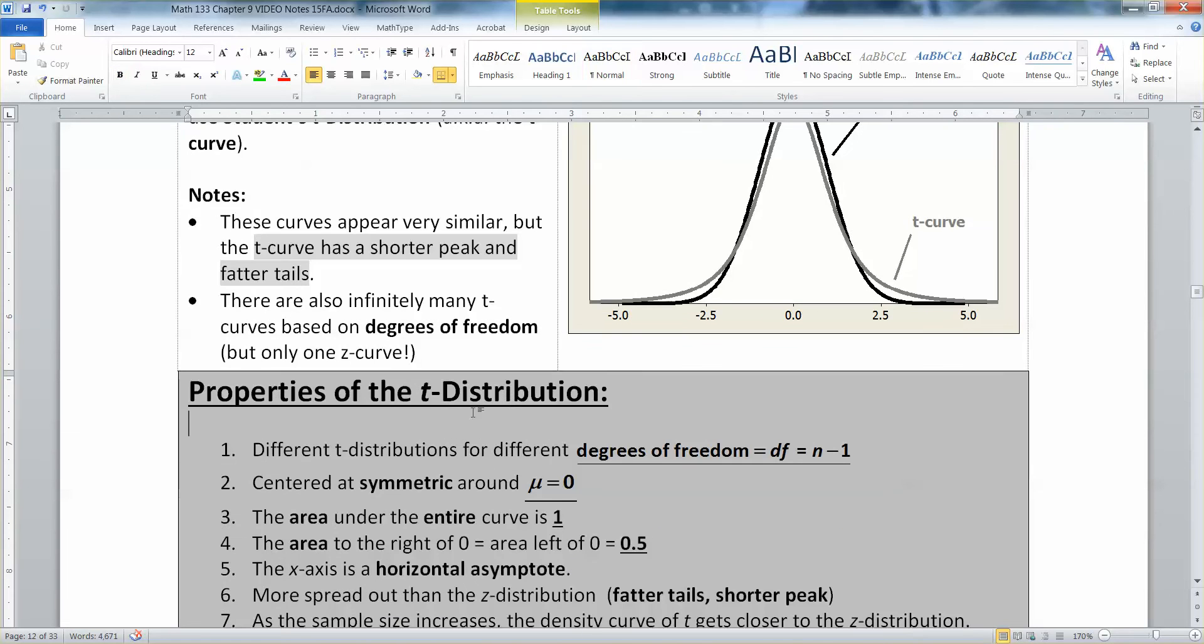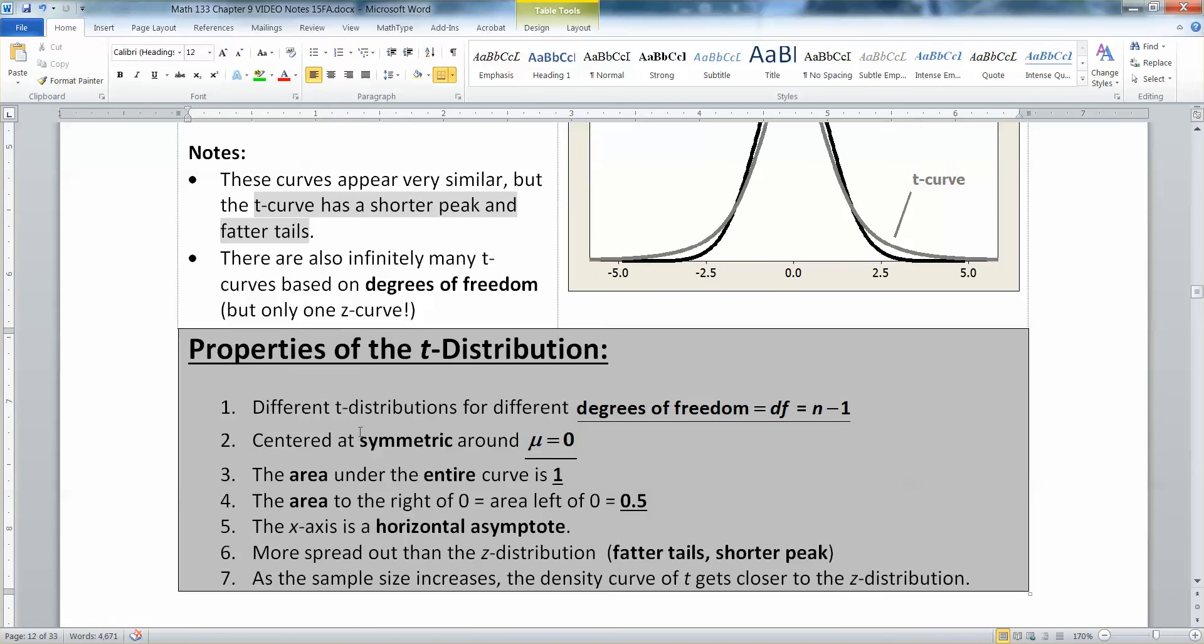T curves are similar to that. They have a lot of the similar properties. That gray curve is very close, but it's not the same. And that difference can make all the difference when you're doing problems. Because if you try to use the Z curve when you shouldn't, you'll end up with wrong answers.